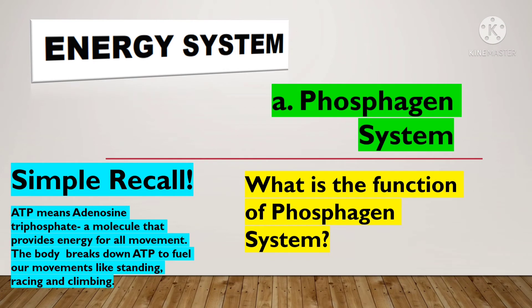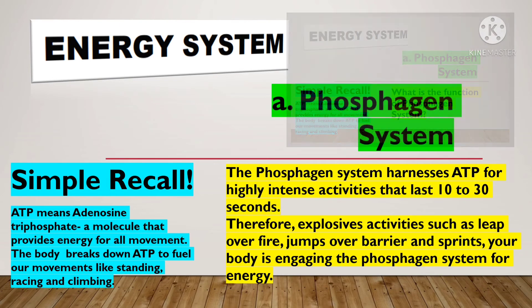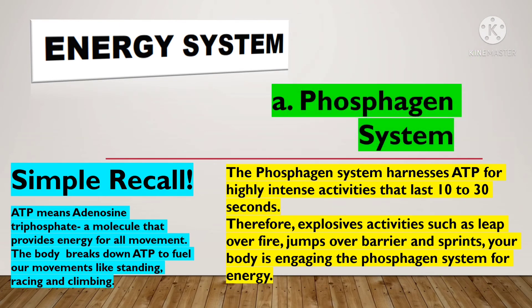What is the function of the phosphagen system? The phosphagen system harnesses ATP for highly intense activities that last 10 to 30 seconds. Therefore, explosive activities such as leaping over fire, jumping over barriers, and sprints — your body is engaging the phosphagen system for energy.